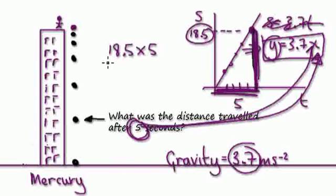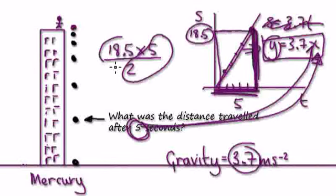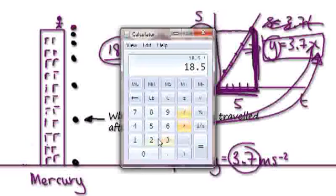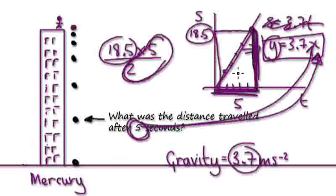Times 5 — that gives you the area of the whole rectangle. So cut it in half, divide by 2. I'm just going to get 18.5 times 2.5, because 5 divided by 2 is 2.5. So 18.5 times 2.5 equals — the area here is 46.25. So remember, the area here is actually in meters.